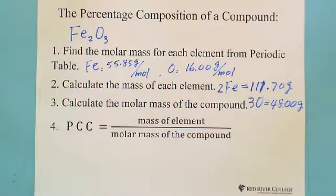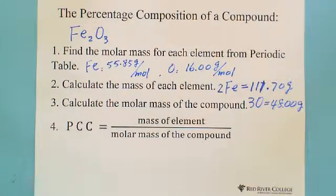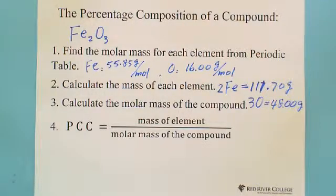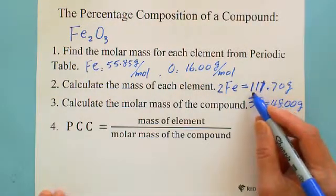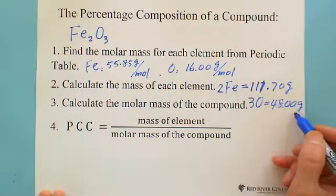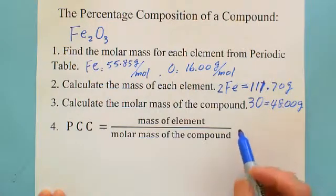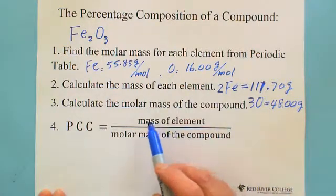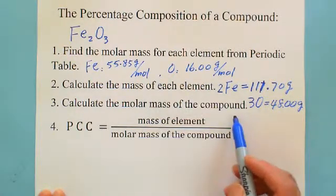The third step is to calculate the molar mass of the compound. We have two moles of iron and three moles of oxygen in iron(III) oxide. We add the two masses together to find the total molar mass of the compound.